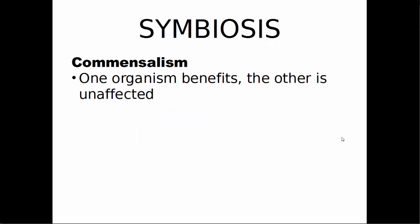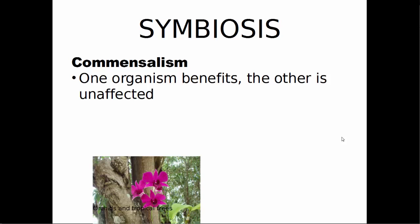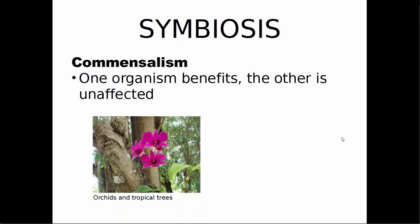Symbiosis has three different kinds of relationships. The first is commensalism, where one organism in the relationship benefits and the other is largely unaffected. An example of this is orchids and tropical trees. Orchids are a relatively small plant that have trouble getting to sunlight, so they grow on top of large tropical trees. The trees are unaffected, but the orchid benefits because it's able to get sunlight more easily.